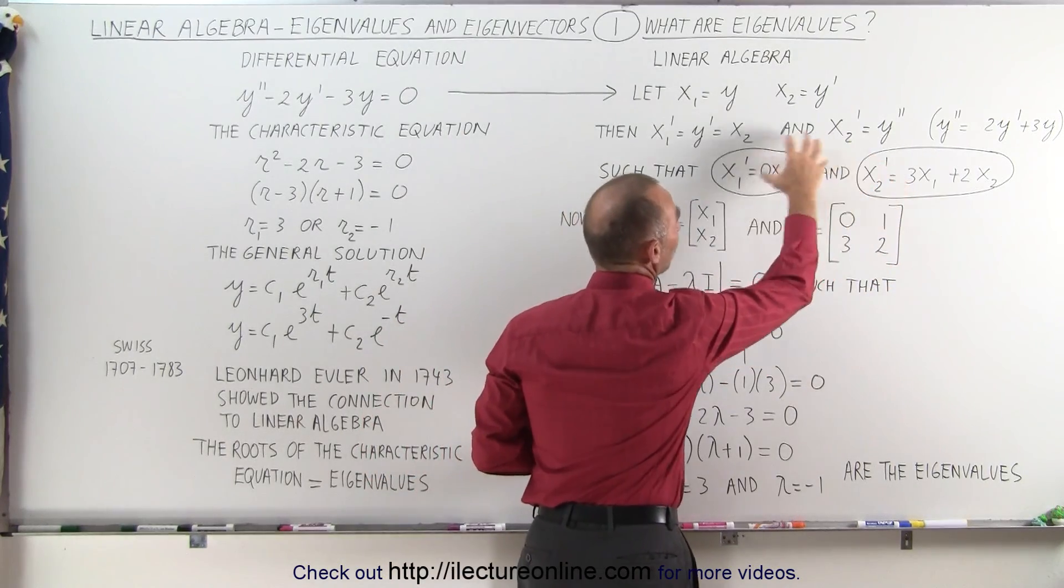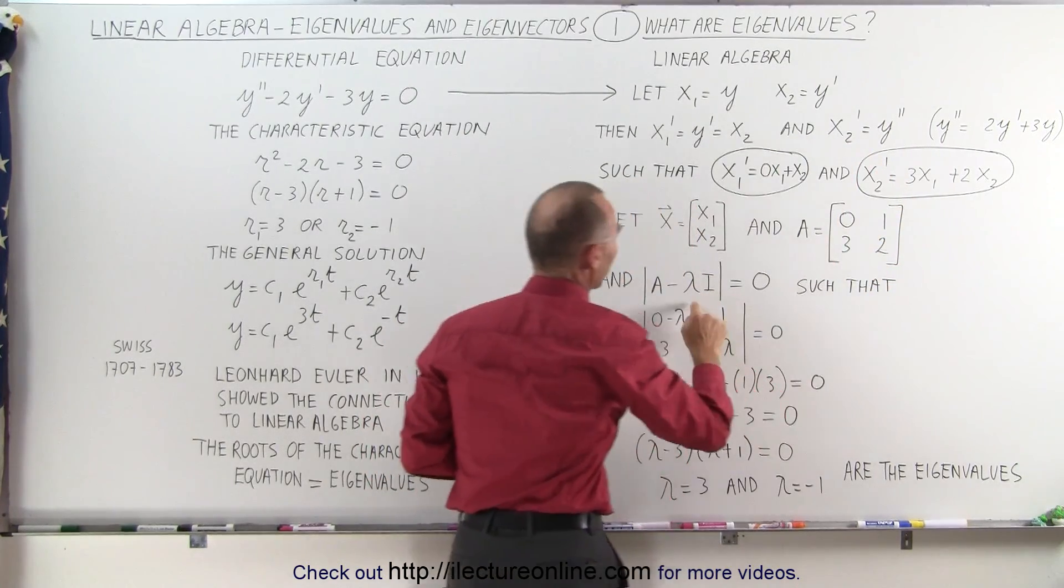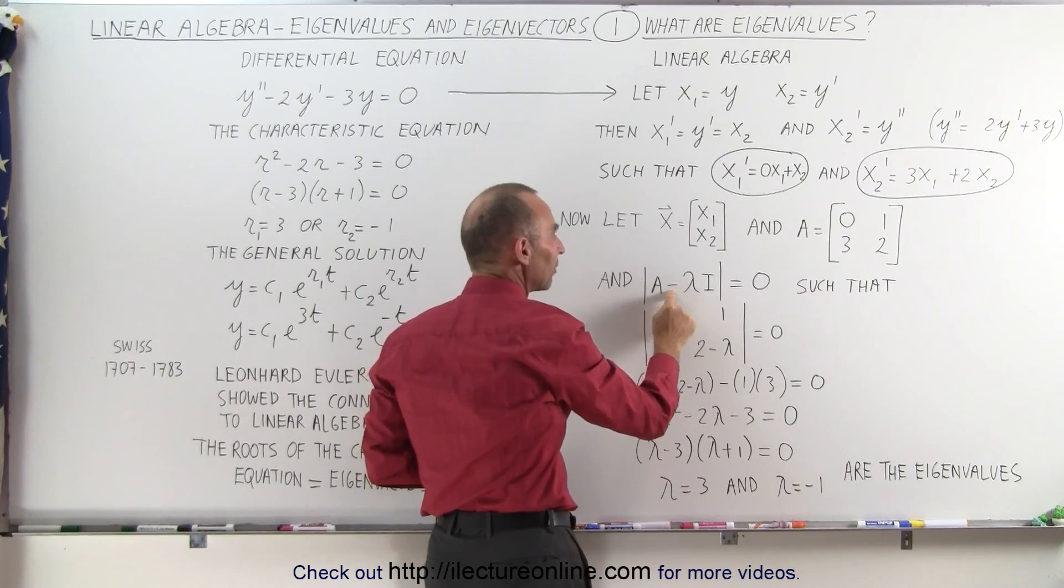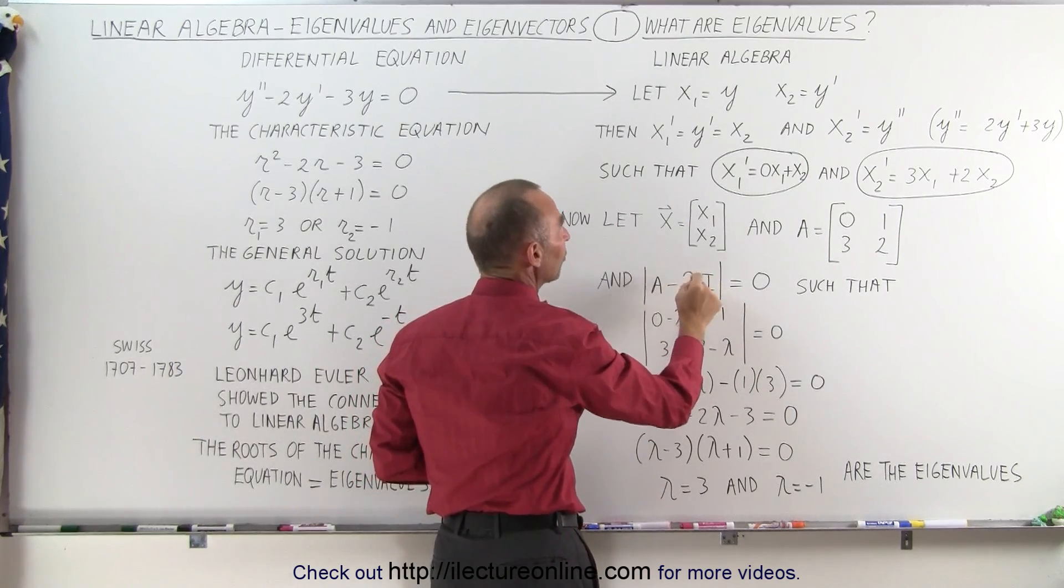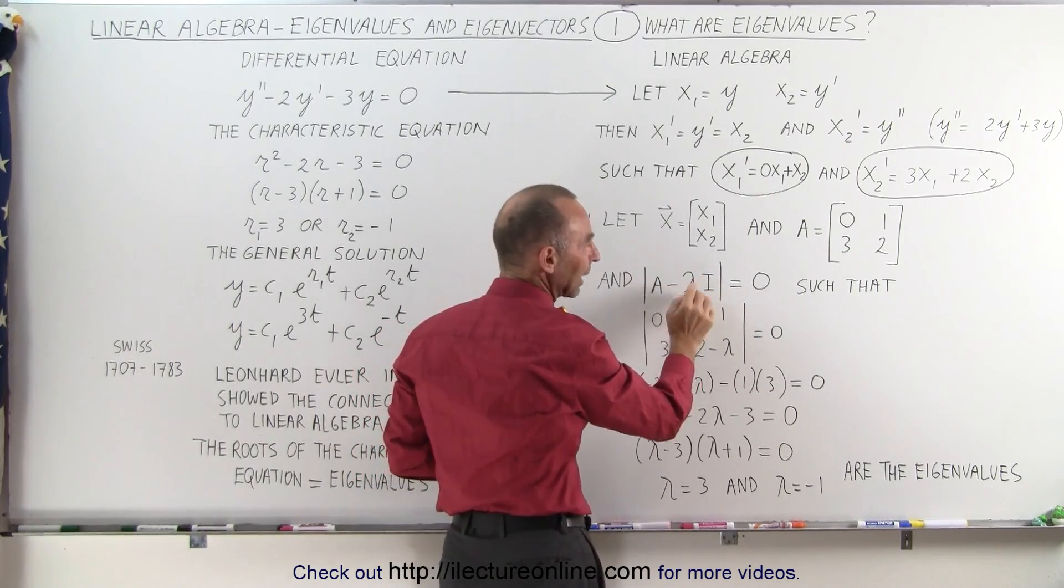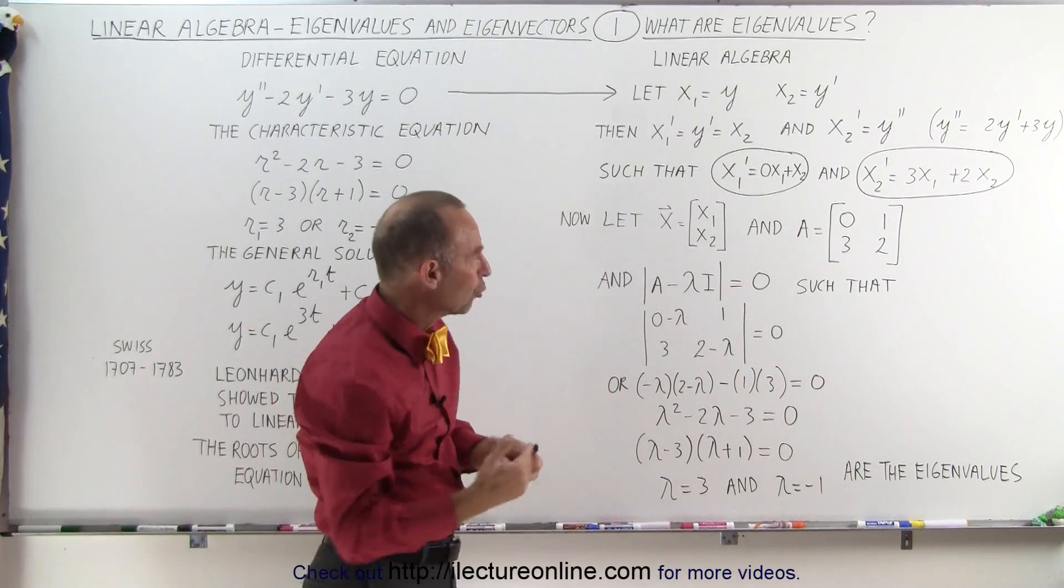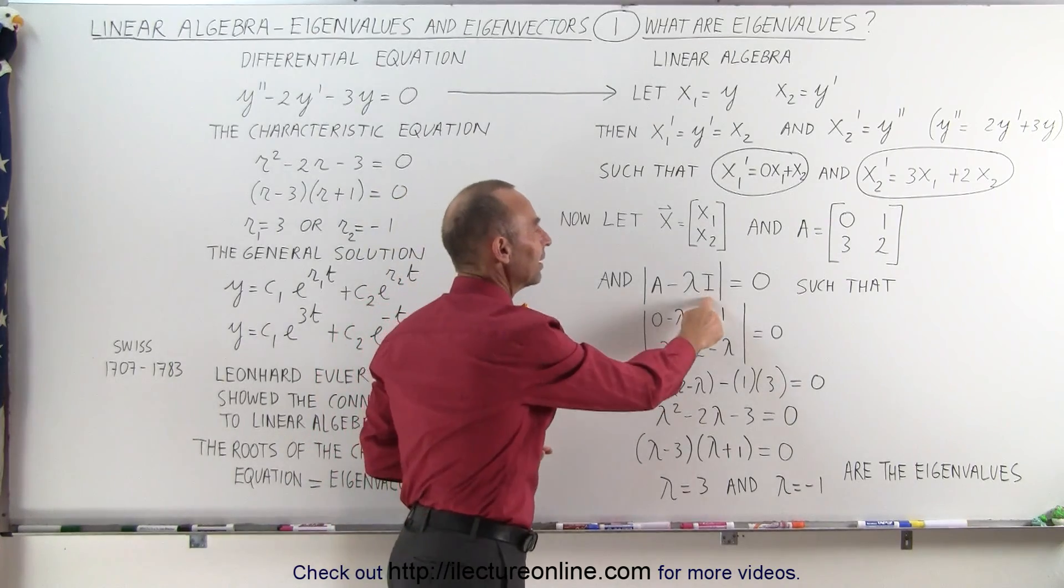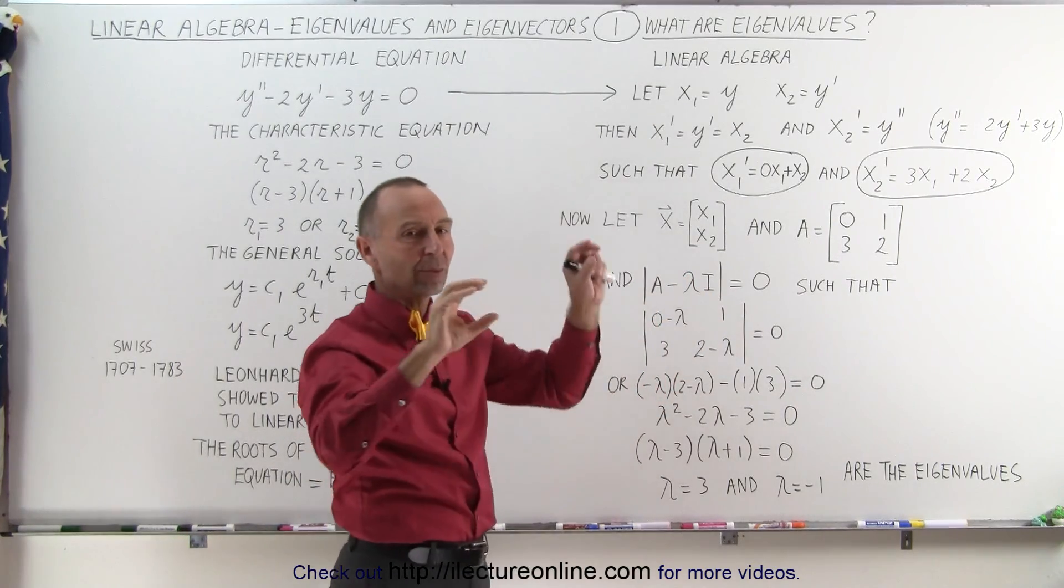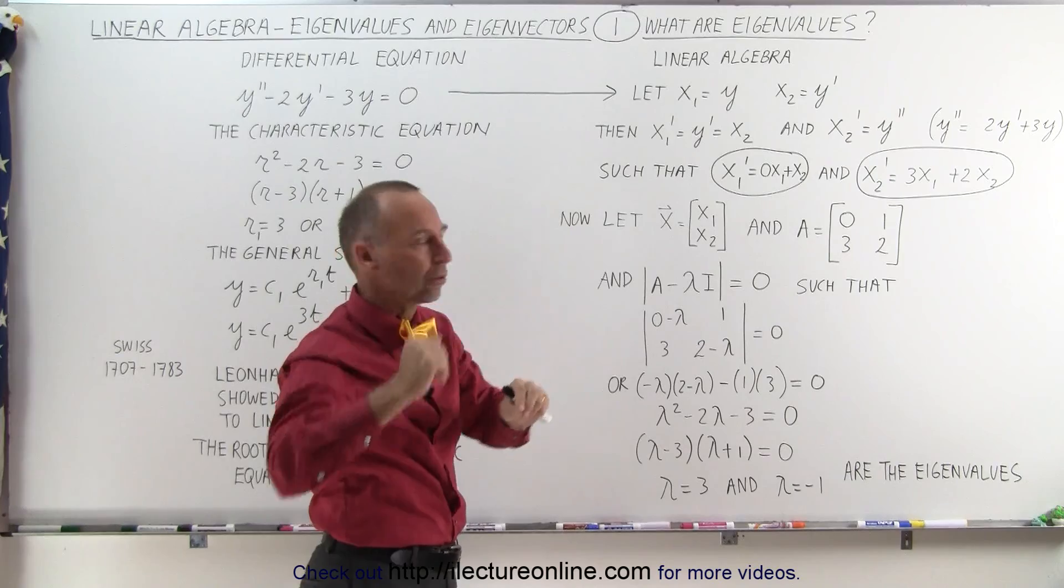And subtract from that some constant—this is called the eigenvalue and we'll get to that in just a moment—multiply times the identity matrix. Of course here we're dealing with a 2×2 matrix, so the identity matrix is simply a matrix with zeros in the corners and ones across the diagonal.